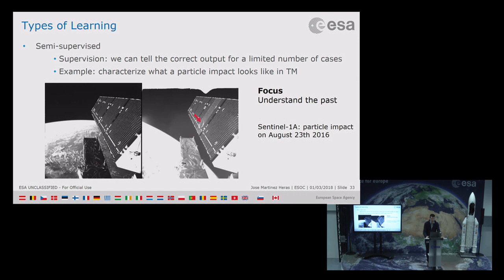Semi-supervised is a mixture of the two — we can tell what the correct output was for a limited number of cases. For instance, we are starting a project with the space debris office. We know that for Sentinel-1A there was a particle impact crashing on the solar array, visible in telemetry as a drop in power and a change in attitude. Based on this known case, we want to understand what changes in telemetry so we can detect smaller particles, not only in Sentinel-1A but also in other Sentinels, and use this to calibrate space debris models.